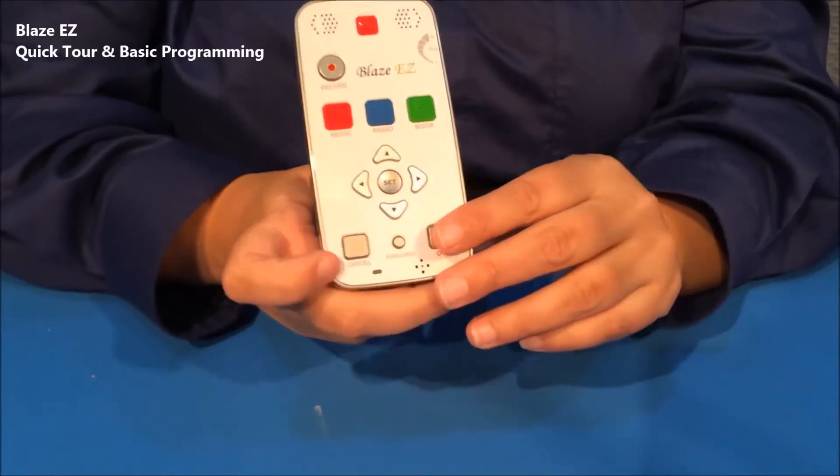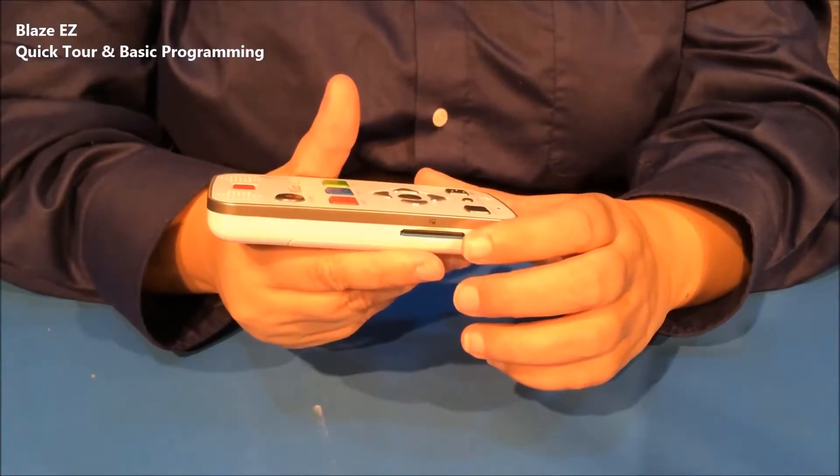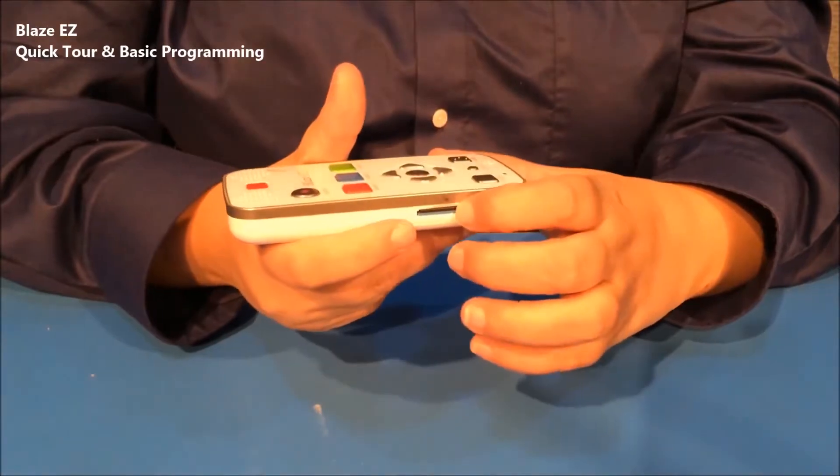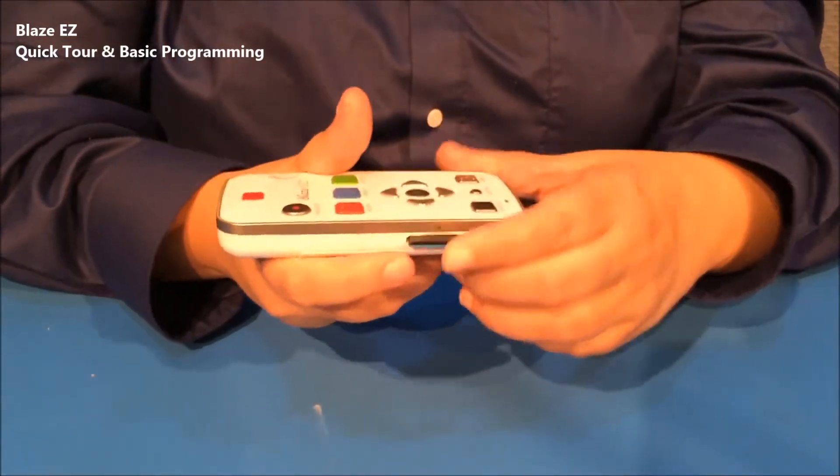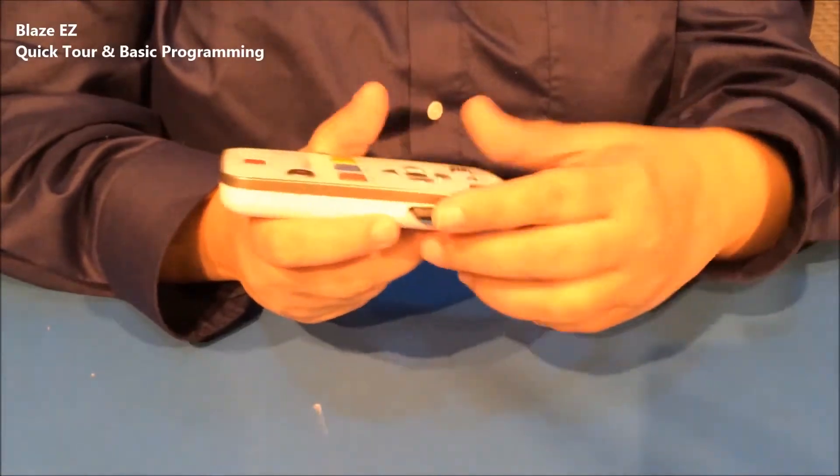If we move around to the left side of the unit, you have the SD card slot. And right now there's an SD card in it. I'll remove that, and you can see that there's a nice little slot. And I will again reinsert the SD card.